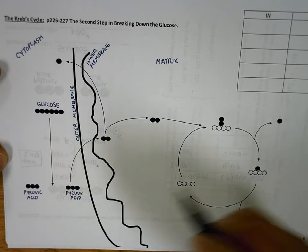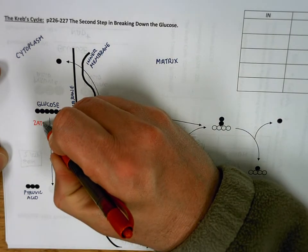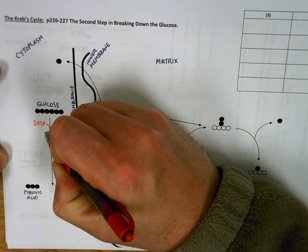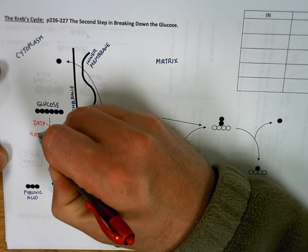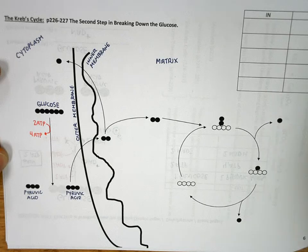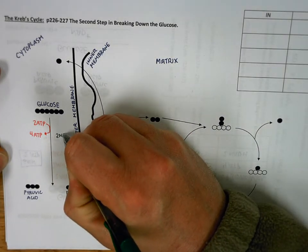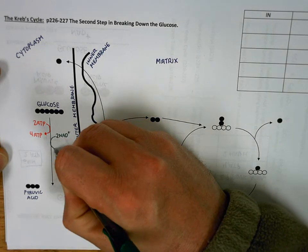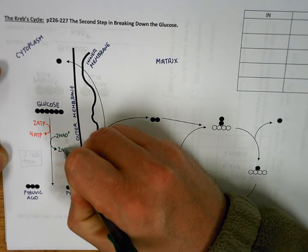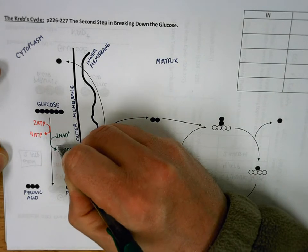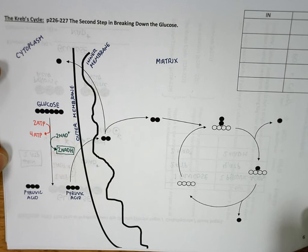We said in summary you have to put two ATPs in to this process, this pathway, and you get four ATPs out. We also said you need to remove some electrons. So you take the two NADs and you strip some electrons off, getting two NADH.